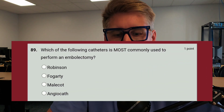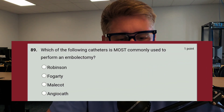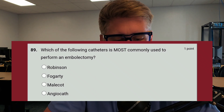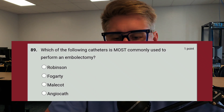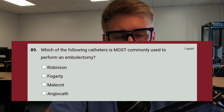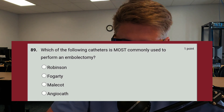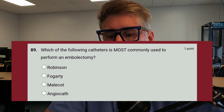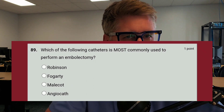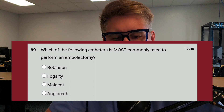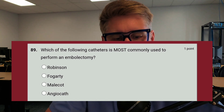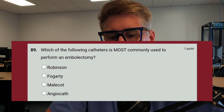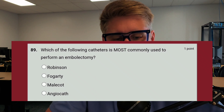Bonus question — I'll put it up on the screen. Which of the following catheters is most commonly used to perform an embolectomy? Is it A, a Robinson catheter; B, a Fogarty; C, Melcott; or D, angiocath? Look at that question, surgically map it. Do you know what an embolectomy is? It's important — start there.